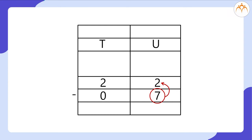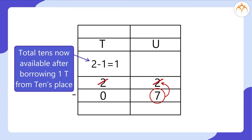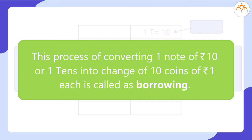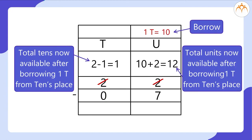Then I converted the note of 10 rupees into change of 10 coins of 1 rupee each, so that now I have 10 plus 2 equals 12 coins of 1 rupee each, from which I am able to pay 7 rupees in the form of 7 coins. This process of converting 1 note of 10 rupees — or 1 ten — into change of 10 coins of 1 rupee each is called borrowing, as the units place digit has borrowed 1 ten from the tens place digit, as shown below.